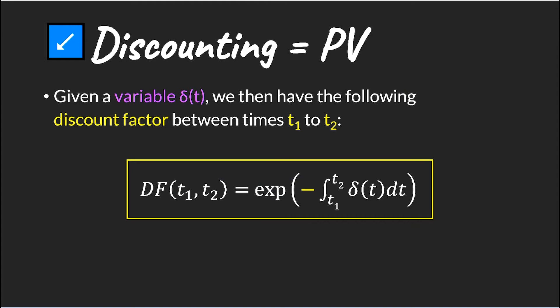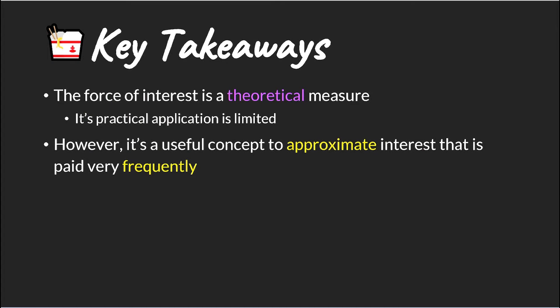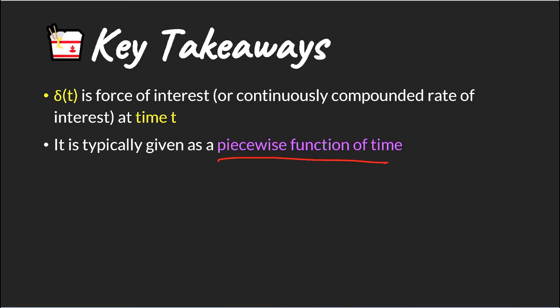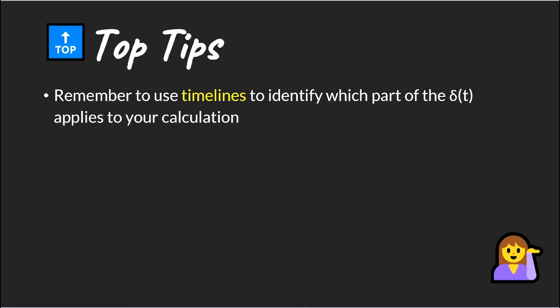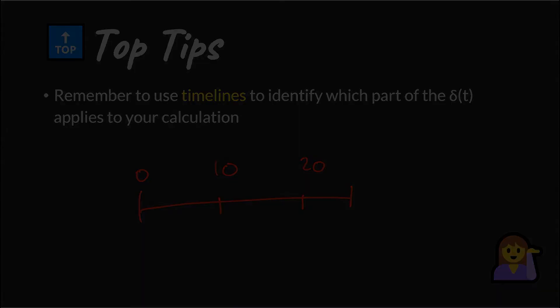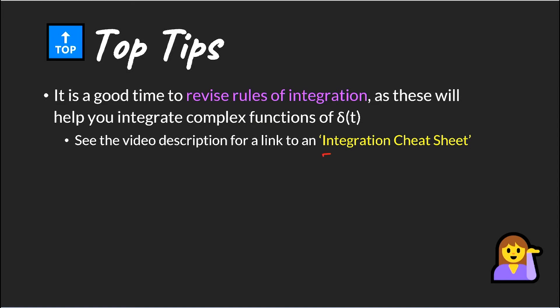The discount factor is simply the inverse of the accumulation factor. As key takeaways: the force of interest is a theoretical measure but is useful to approximate interest paid very frequently. Typically we'll be given a force of interest function defined over different time periods and we need to manage this carefully. It's important to use timelines when doing your calculations to ensure you're using the right force of interest defined for the right period of time. It's also very important to revise your rules of integration, as this is one of the easiest ways to lose marks. An integration cheat sheet link has been added in the description below.